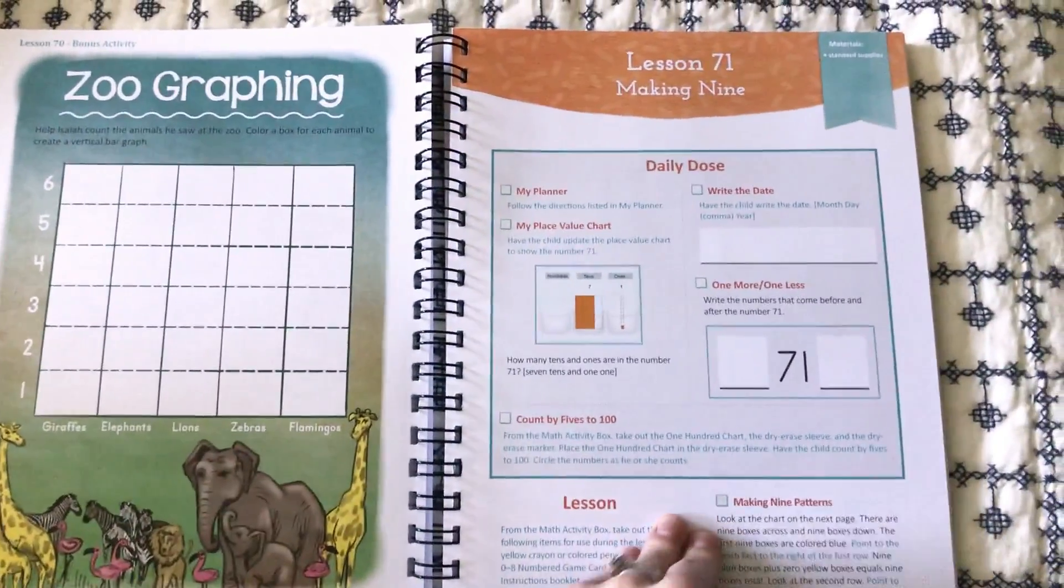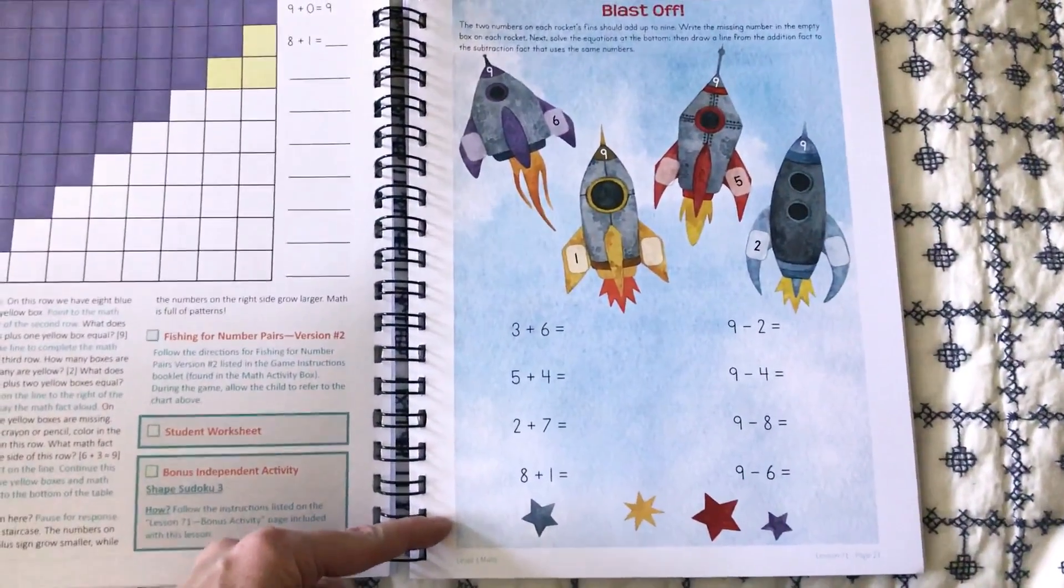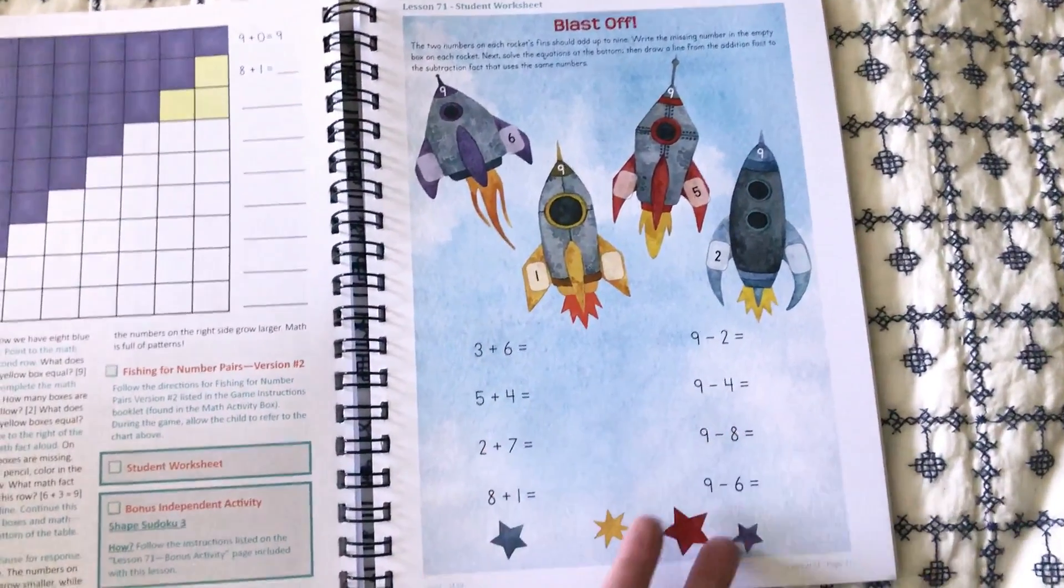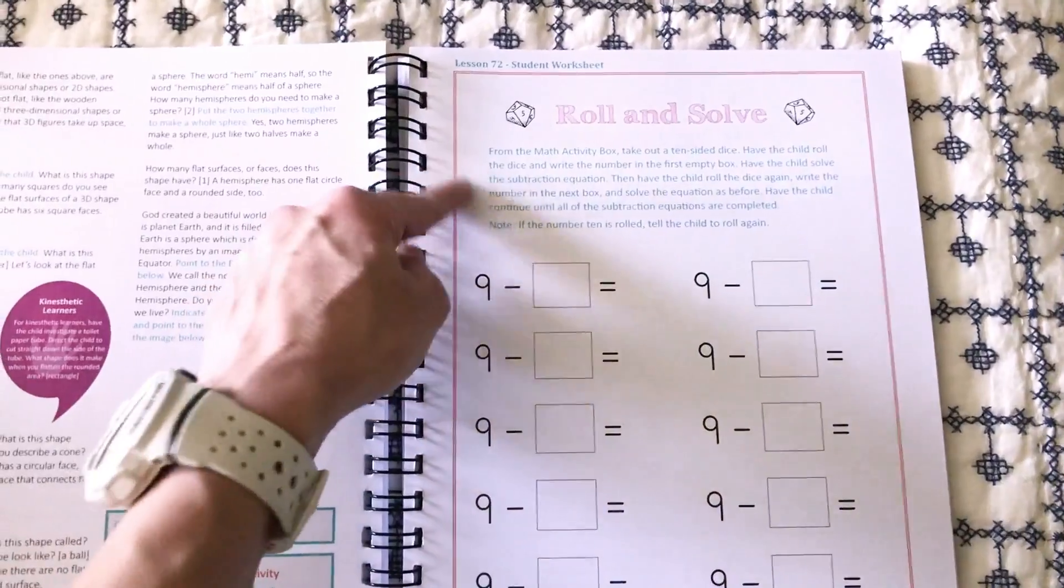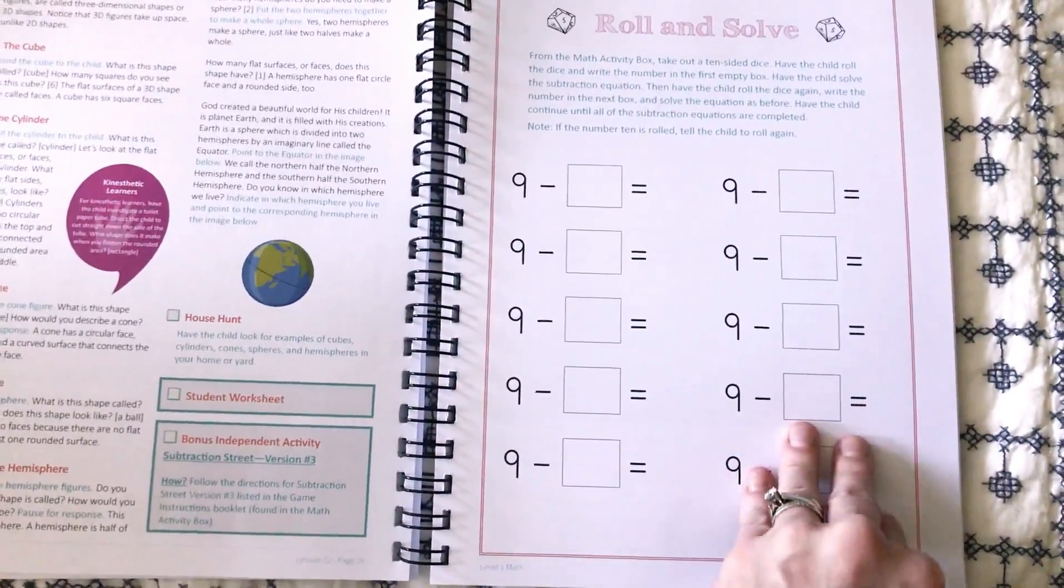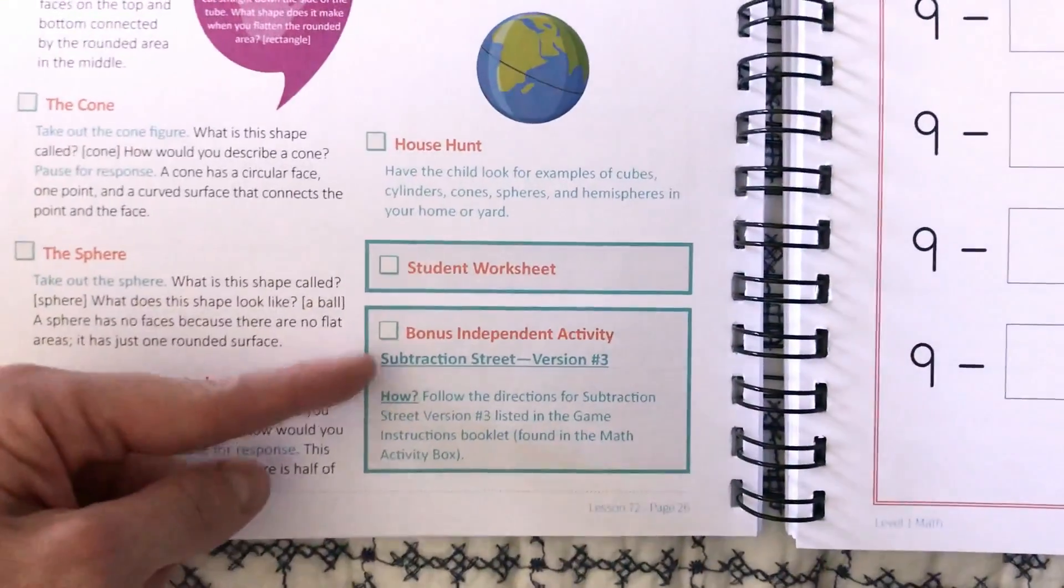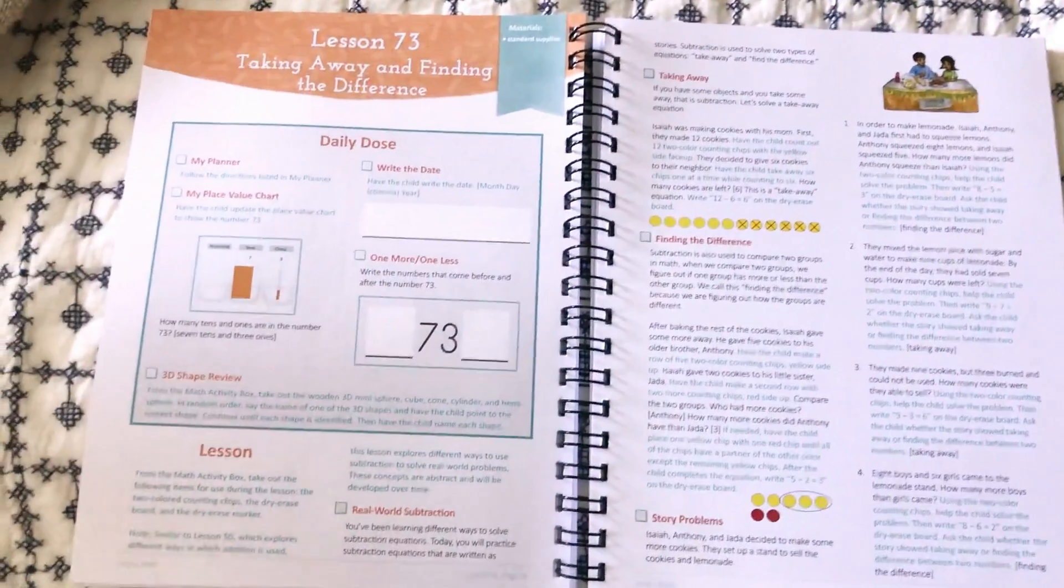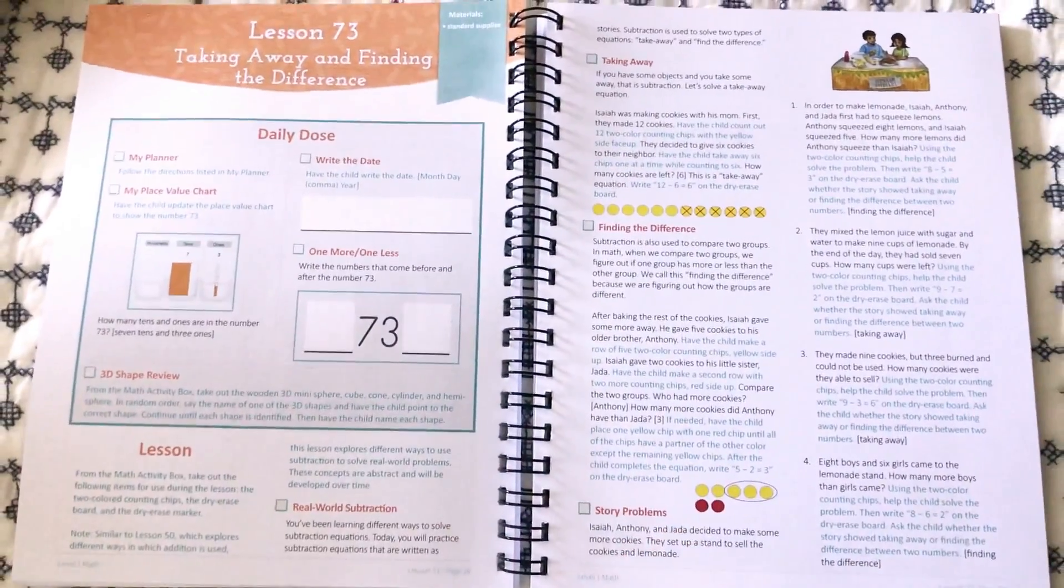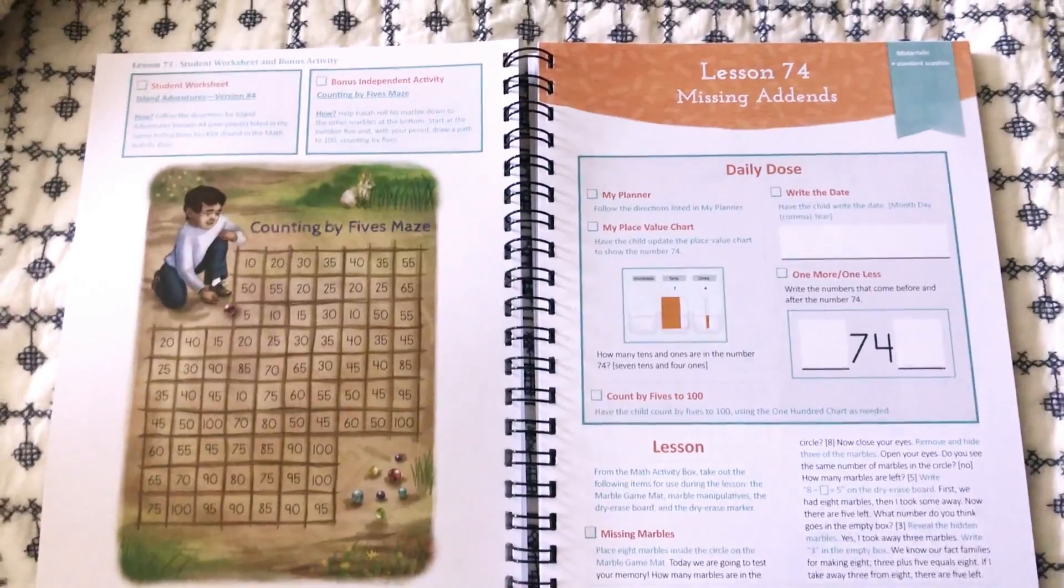Drew absolutely loves the games. So I'm just going to flip through. I'm not going to flip through every single lesson. But you can kind of see, for instance, here's a worksheet. So if you were to look at this curriculum, you might look and go, well, that's not enough practice. But roll and solve. So this is an example of a game, you would get the dice, and then they get to interact and play a game as they're doing the worksheet. And then here's an example of practice for subtraction. So you're going to get out Subtraction Street, which is a game included, and you're going to follow the game instructions. And I can tell you that Drew loves the games and a lot of the games they can do on their own. So you can have the game out for them and they'll be doing it on their own while you're working with another child. So I love that.